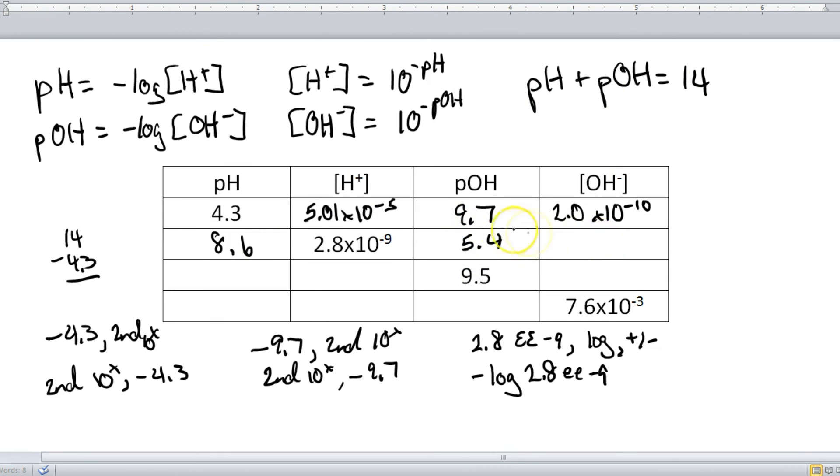And then to get the hydroxide concentration, we're going to do the same thing we did in the last step. I'm going to do this, the 10 to the x negative 5.4.